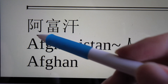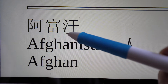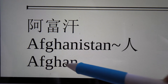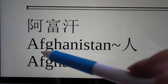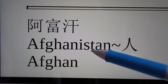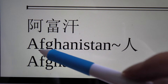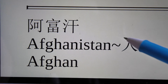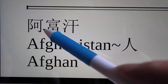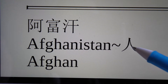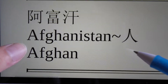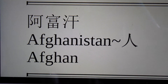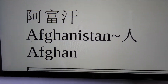Afuhan. Afuhan in English is Afghan, and Afghanistan in Chinese is Afuhanren. Afuhan Ren. And this is Afghan in Chinese. And now I'll show you how to write Afghan in Chinese.